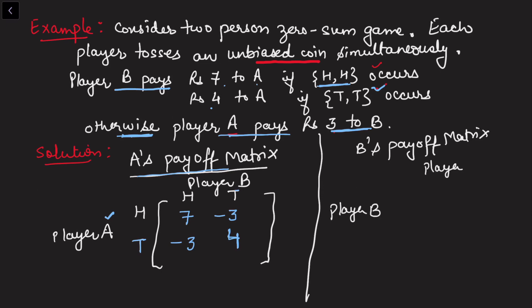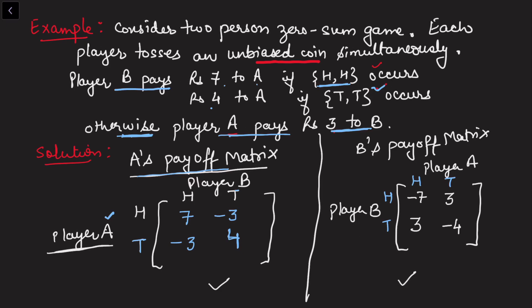Now constructing B's payoff matrix with player B on the left and player A on top: for head-head, B paid rupees 7, which is a loss, so it is minus 7; for tail-tail, it is minus 4. In the other case, B receives rupees 3, so it is plus 3. This is how we construct payoff matrices depending on which player is kept on the left-hand side.